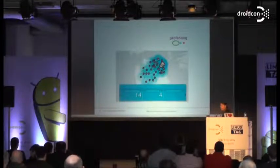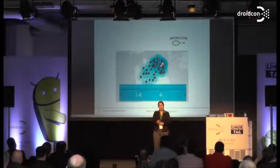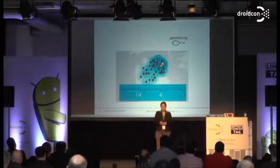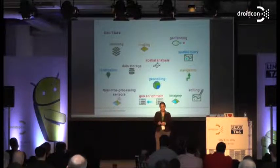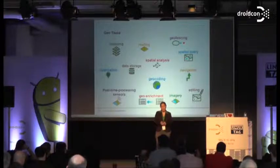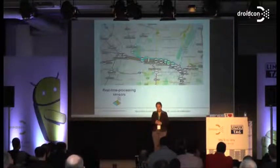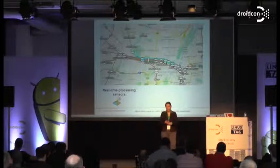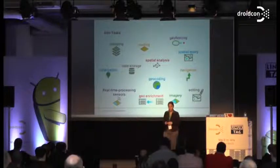Another example: if you have Starbucks or other stores and you want to provide vouchers, every time a customer gets near a store they receive a coupon to get a drink. Another example is real-time processing with sensors, for example weather data — sensors are used to produce weather forecasts on the fly. And there's a nice application using public transportation data of Munich where you can see the trains moving on the map.